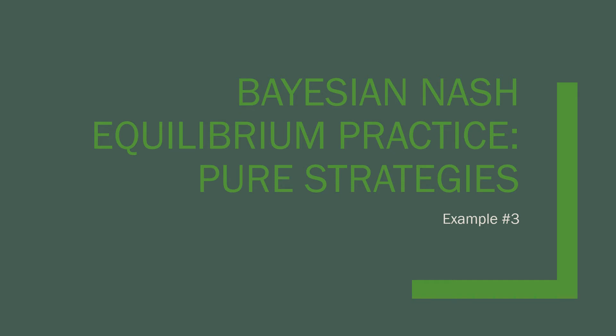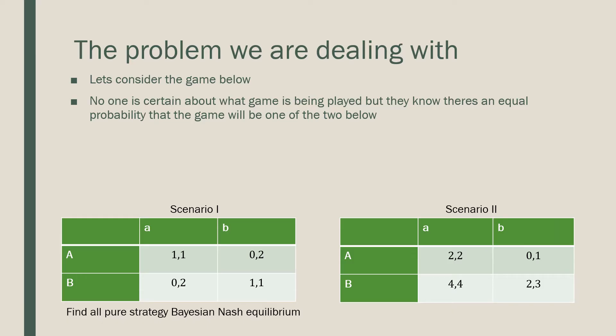Hey guys, welcome to our third example in our Bayesian Nash equilibrium practice where we discuss pure strategies. Here we're going to deal with a little bit more of a complicated sort of game. In this situation, no one is certain about what game is going to be played, but we know that there's an equal probability that the game will be one of the two below. We're asked to find all pure strategy Nash equilibria.